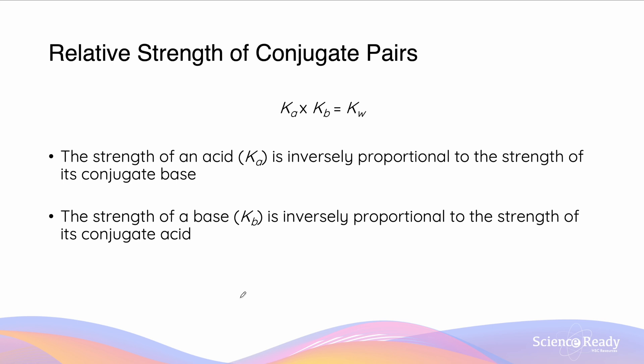So, the relative strength of a conjugate pair is going to be quantified by the relationship which we discussed in the pKa and pKb video. Ka times Kb equals to Kw. The strength of an acid Ka is going to be inversely proportional to the strength of a conjugate base, because Kw has a set value of 1 times 10 to the negative 14 at 25 degrees. And similarly, the strength of Kb, the base, is going to be inversely proportional if we use this Ka-Kb relationship.